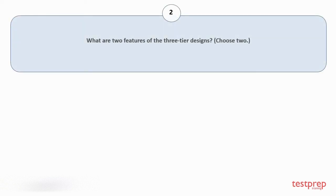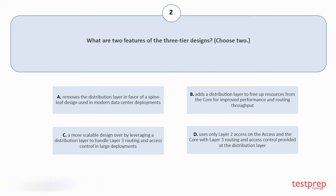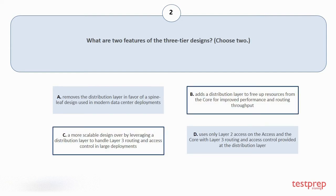Question number 2, What are 2 features of the 3 tier designs? Choose 2. Your options are: removes the distribution layer in favor of a spine-leaf design used in modern data center deployments; adds a distribution layer to free up resources from the core for improved performance and routing throughput; a more scalable design by leveraging a distribution layer to handle layer 3 routing and access control in large deployments; uses only layer 2 access on the access and the core with layer 3 routing and access control provided at the distribution layer. The correct answers are option b and c.